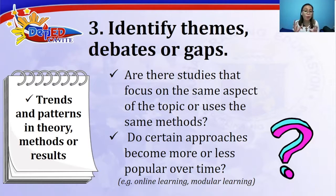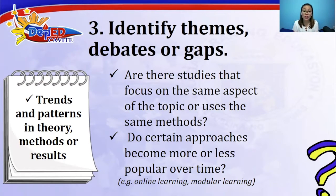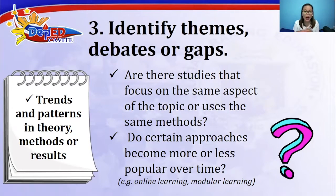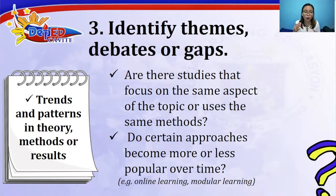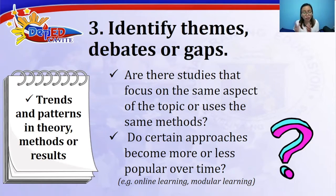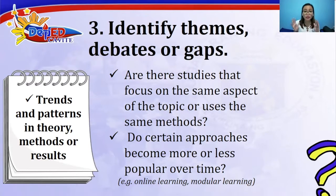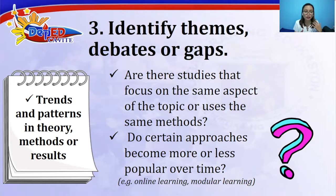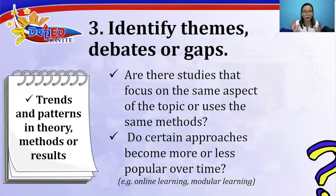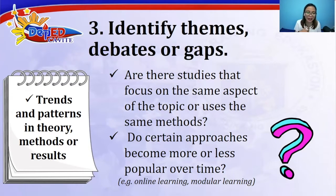Those are good starting points for your literature review. Literature review is something that is often neglected because we sometimes focus more on the methodology part. However, literature review is very important — it gives you as a researcher the idea of what studies have been published related to your study. During the defense of a research proposal, it becomes the ammunition we can use to defend our study.